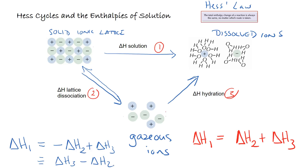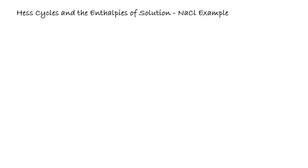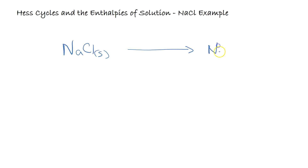So just to finish with, we'll try some actual examples. We're going to look at the Hess cycle for the enthalpy of solution of sodium chloride. I'm constructing a Hess cycle: we have NaCl(s), and the enthalpy of solution takes us to the aqueous ions Na⁺(aq) and Cl⁻(aq) — this is the enthalpy of solution.